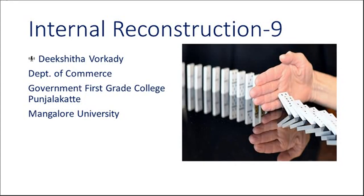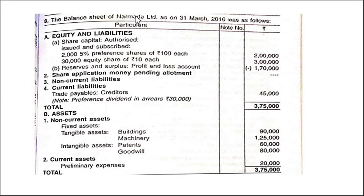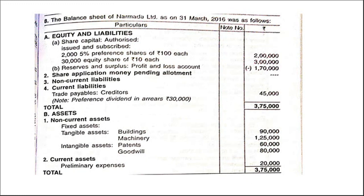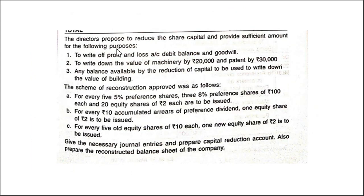Welcome to the ninth class. The problem is the balance sheet of Narmatha Limited is given. There is share capital — preference shares and equity shares. Reserves and surplus shows a profit and loss account with a negative balance, meaning there is a loss. Creditors are there, and a note mentions preference dividends in arrears of ₹30,000. Assets include building, machinery, patents, goodwill, and preliminary expenses. The directors propose to reduce the share capital and provide sufficient amounts for the following purposes — after doing reconstruction, we have to settle all these items.